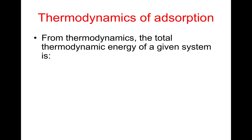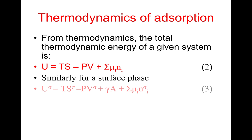From thermodynamics, the total thermodynamic energy of a given system can be written as U = TS - PV + Σμ_i n_i. Similarly, for a surface phase, U^sigma = TS^sigma - PV + γA + Σμ_i n_i^sigma, where sigma denotes the interface.